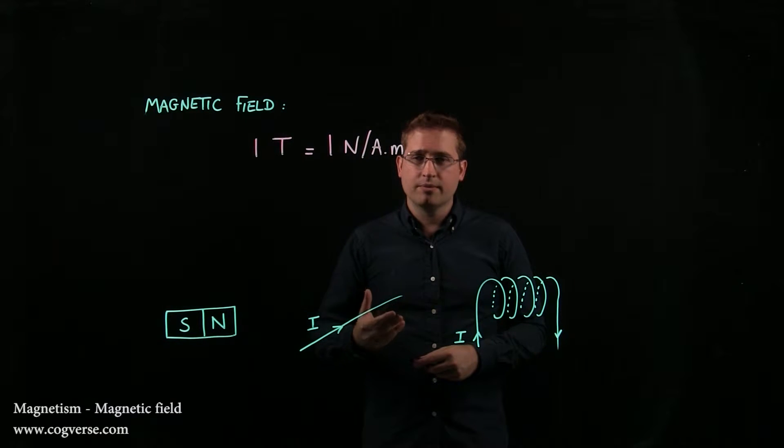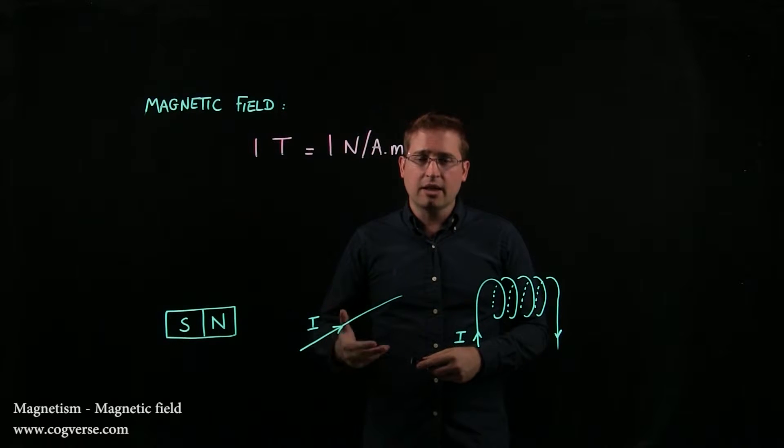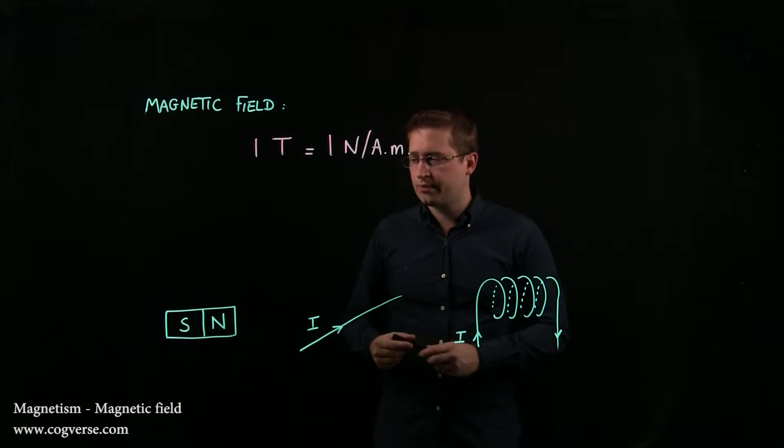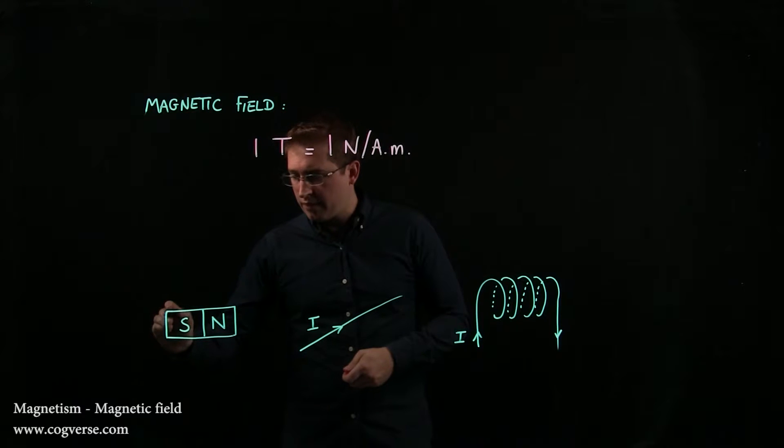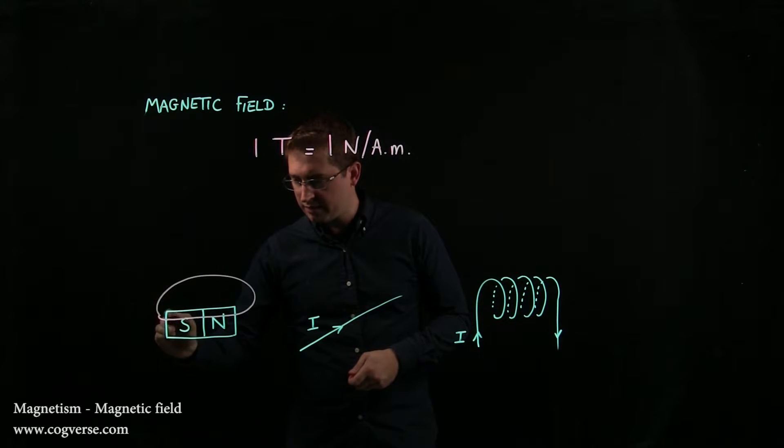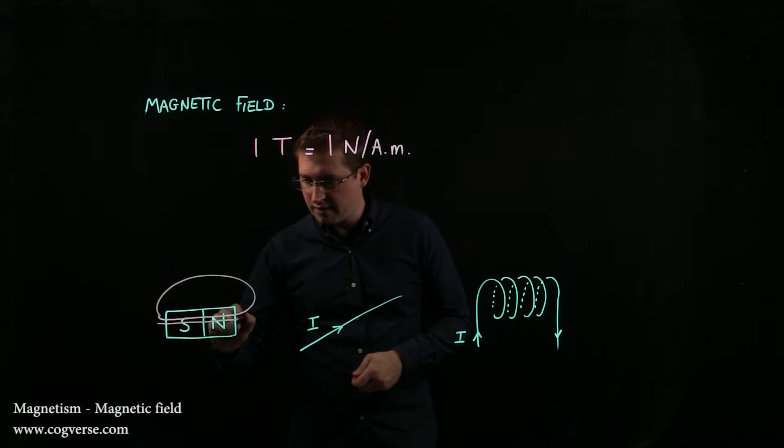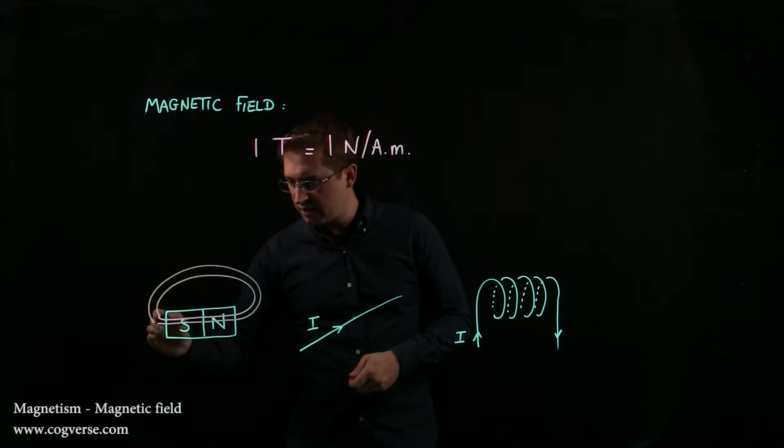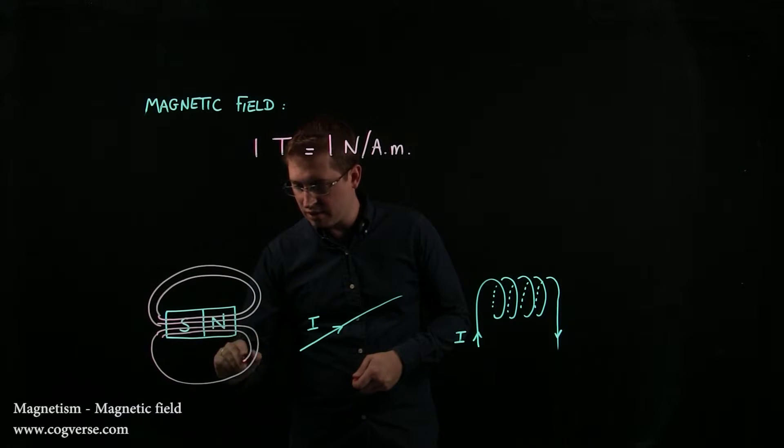But as opposed to electric field lines, magnetic field lines are closed. In other words, we would draw them for this magnet, maybe like this. And we'd see that, in fact, they're closed. So they circle back to themselves, and they must always do that.